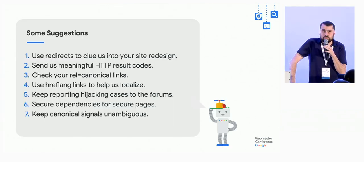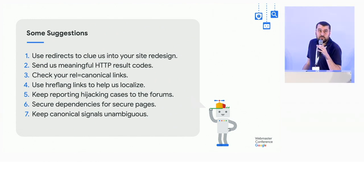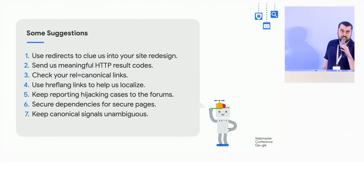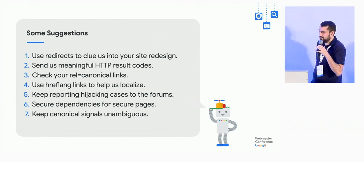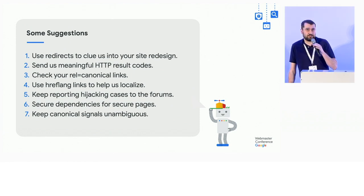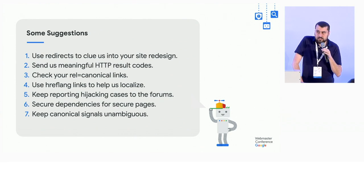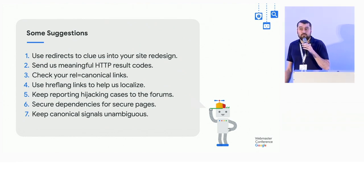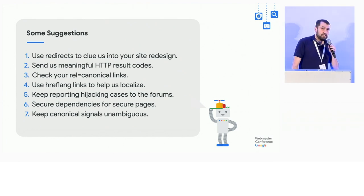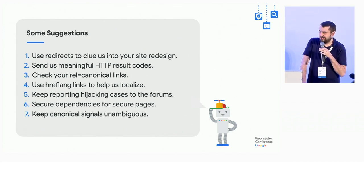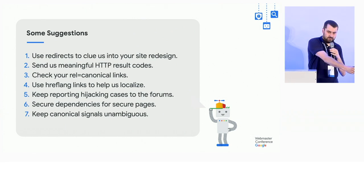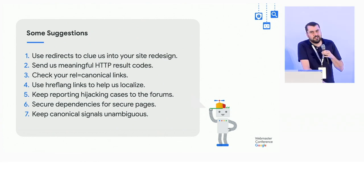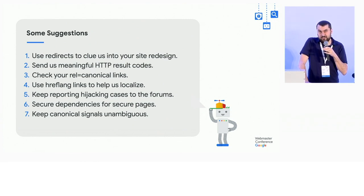To recap, some suggestions: use redirects to clue us in when you redesign your site. Send us meaningful HTTP response codes. Check your rel canonical links — sometimes there are broken scripts. Use hreflang to help us localize. Keep reporting hijacking cases to the forums. Secure the dependencies on your secure pages. And try to keep your canonical signals unambiguous. Sometimes we see a 301 with a rel canonical pointed the other way, and then we don't know what to do. If they're ambiguous, the system will probably just go off and find something else.